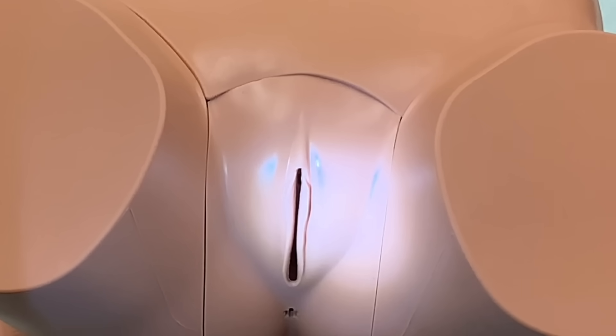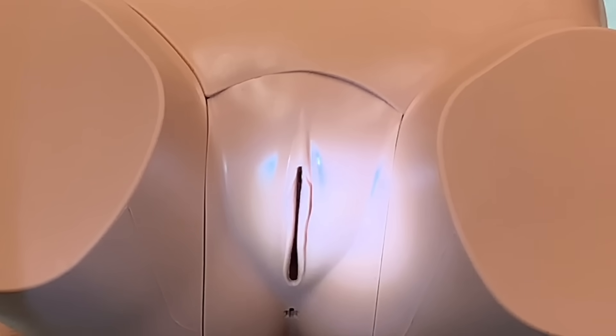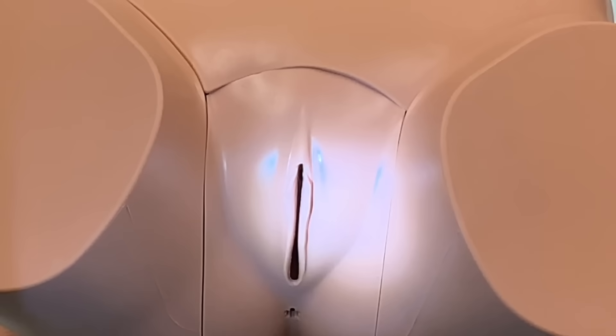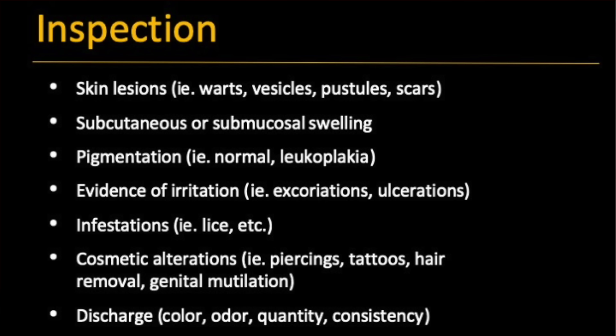Now I'd like to talk about the rest of the examination of the external genitalia. On inspection, we are going to be looking for skin lesions, subcutaneous or skin swelling, any pigmented lesions, any areas of ulcerations or infestations, any piercings that may be present, as well as noting any discharge at the vaginal opening. When you see discharge, it is important to comment on the color, odor, texture, and amount that may be present.